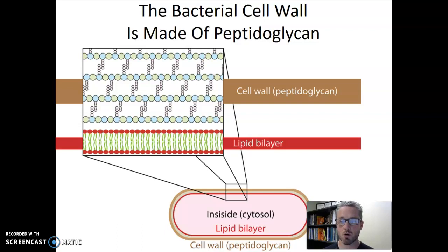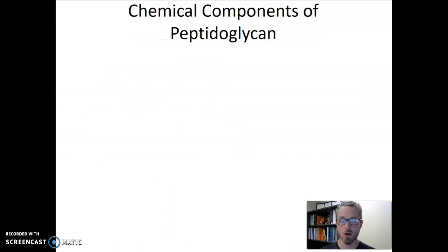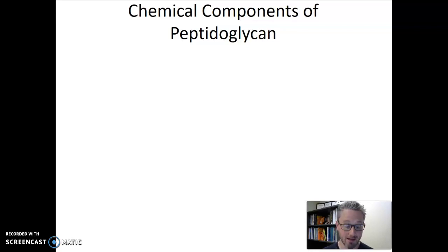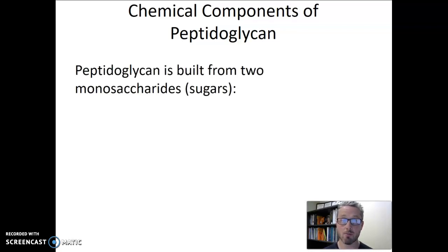Let's think more deeply about what's going on inside peptidoglycan — specifically what it's actually made out of. Peptidoglycan is made out of just two chemical components: two monosaccharides. A monosaccharide is just a single sugar, so the chemicals that make up the peptidoglycan cell wall are mostly sugars.